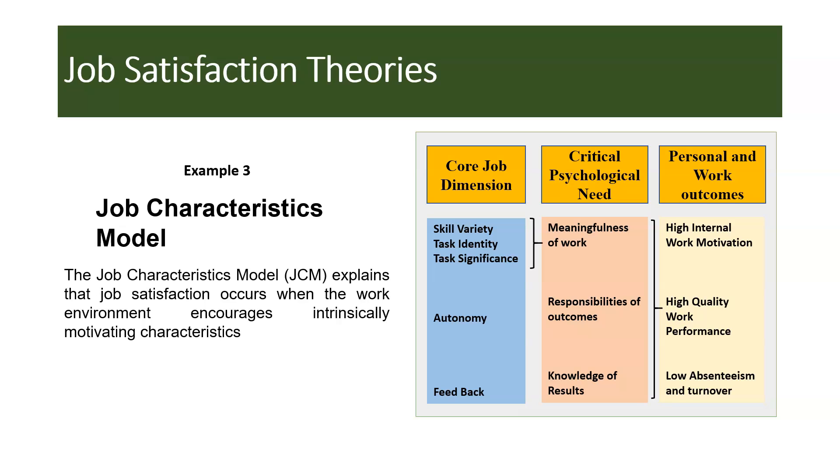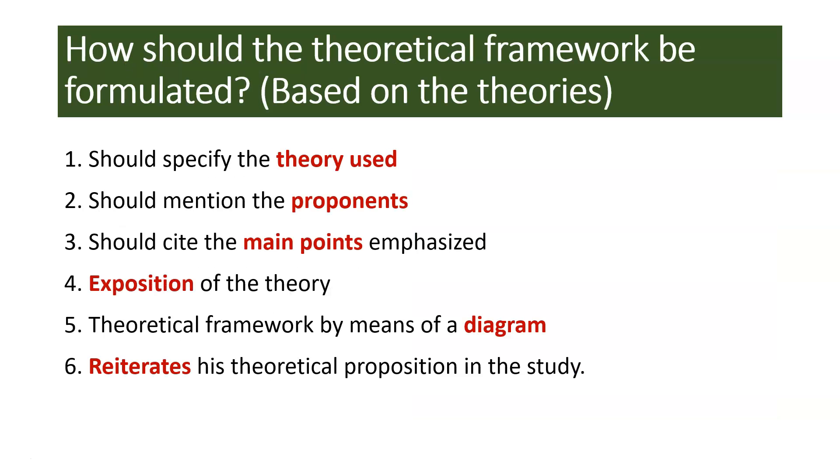Number three is Job Characteristics Model. The JCM Model explains that job satisfaction occurs when the work environment encourages intrinsically motivating characteristics. Theories as an example, and all these theories are related to job satisfaction aspects.